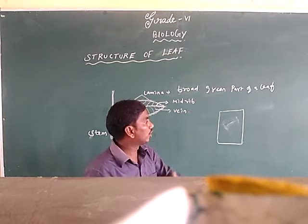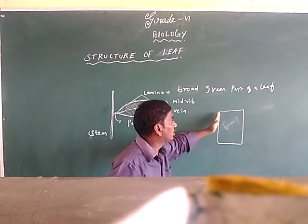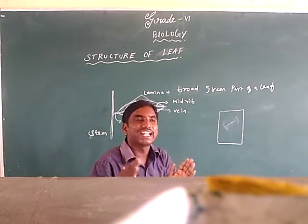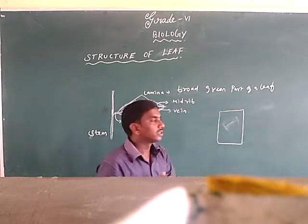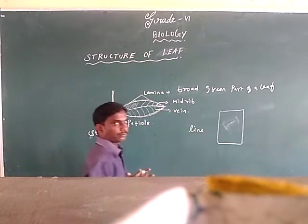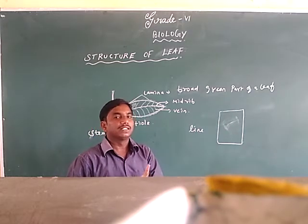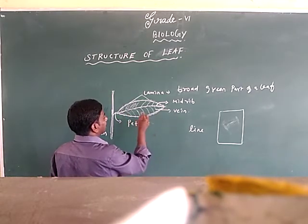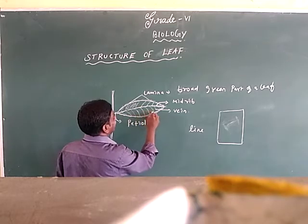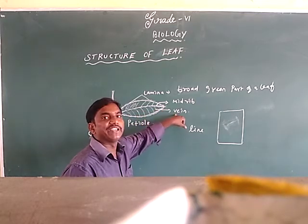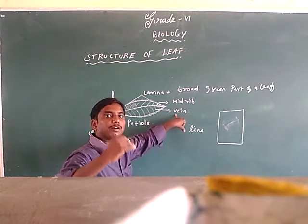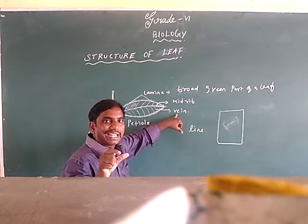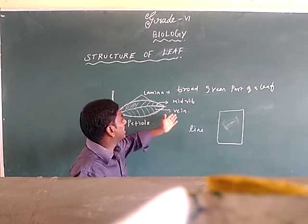After rubbing, remove the paper and observe the leaf print. You will see some lines on the leaf impression. Definitely you can observe some lines. The lines you see on the leaves are called veins. These lines present inside the lamina are called veins.